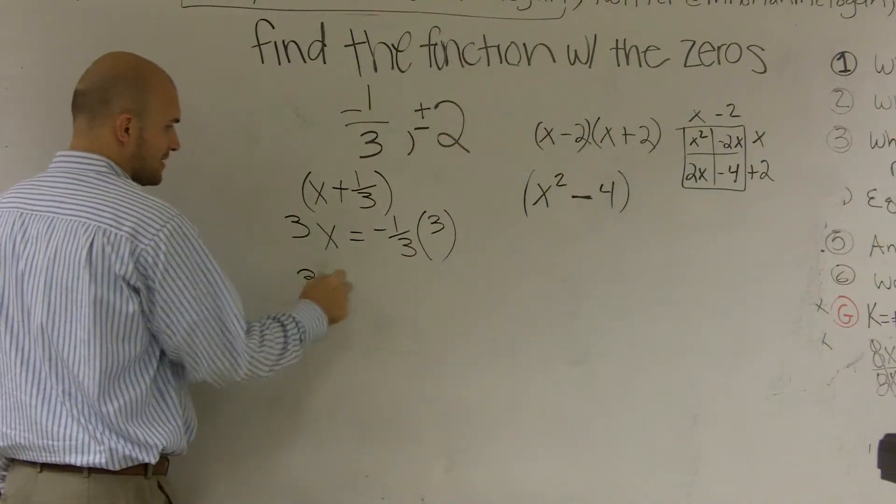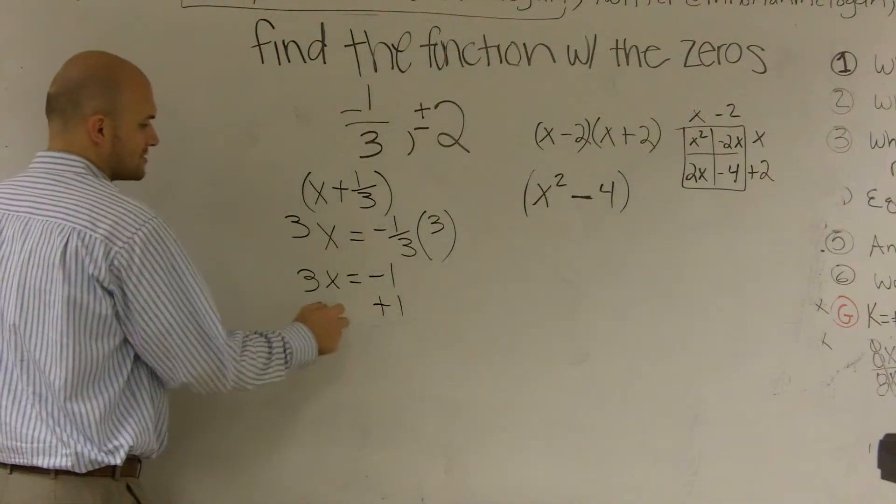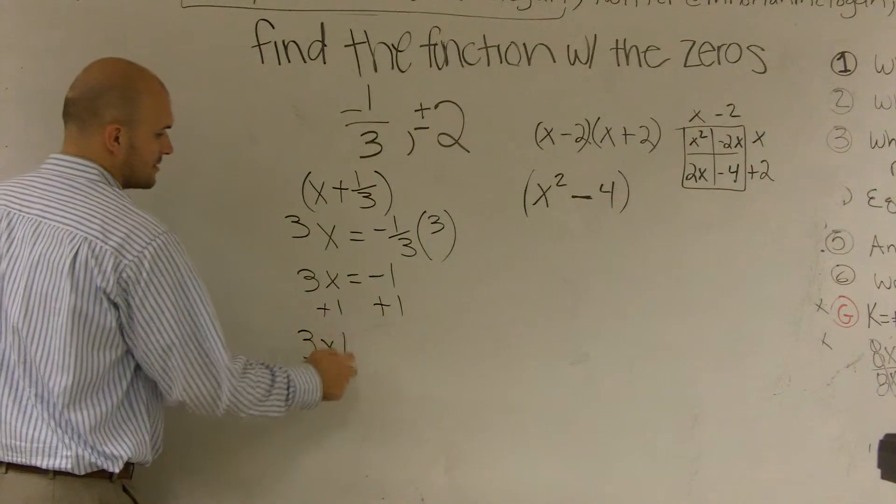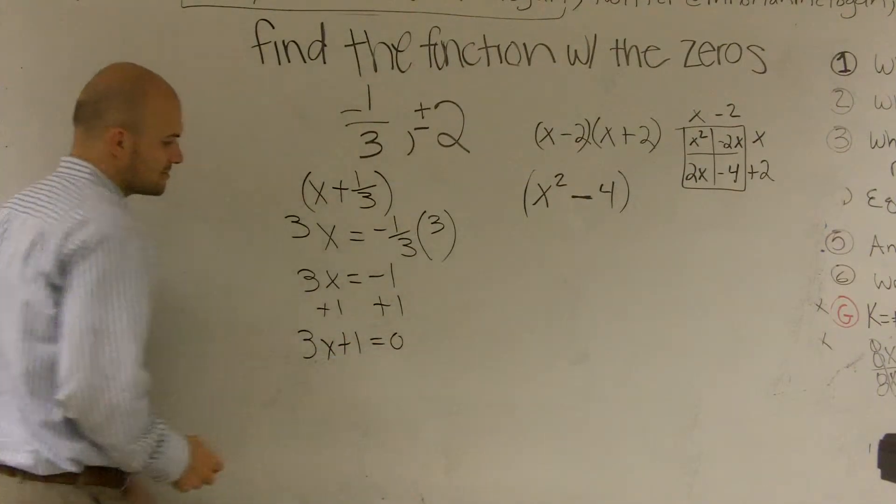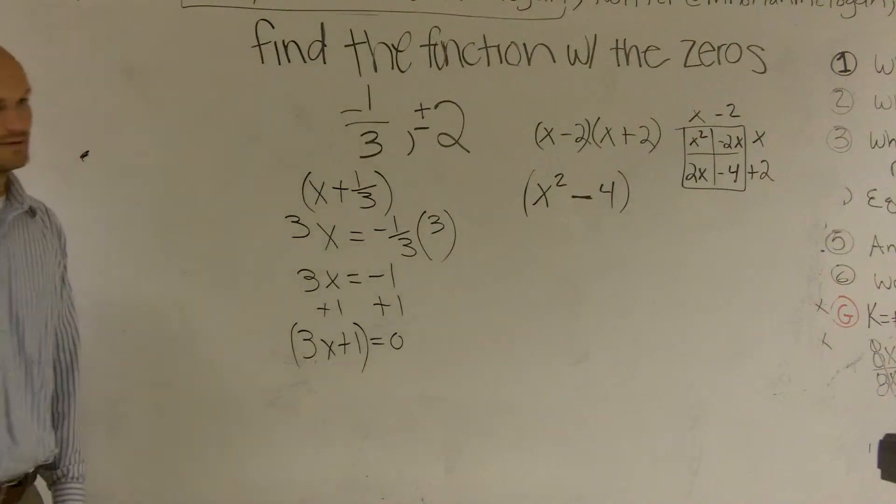Well, let's put it back into factor form. Instead of adding that one-third back over, we can multiply by three. Right, Jessica? Then you get 3x equals negative one. Then I can add the one to the other side. So I get 3x plus one equals zero. So you could say, make this your factor. Okay. And that's what we'll do.